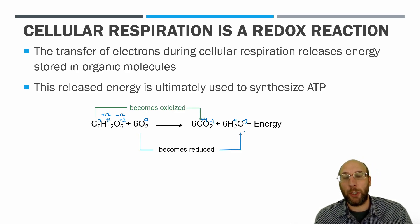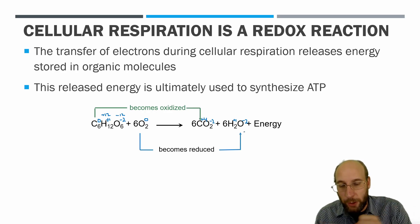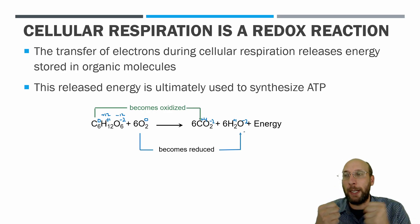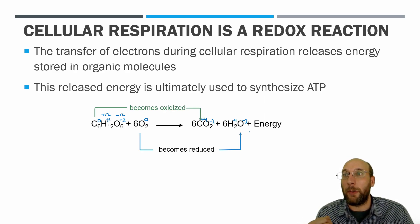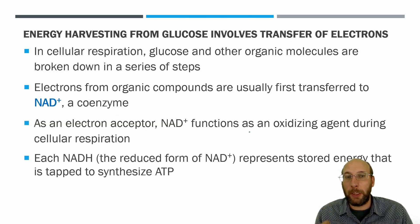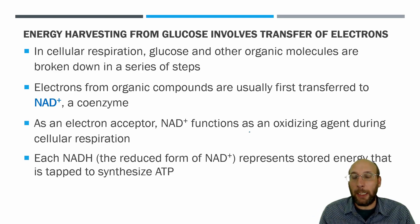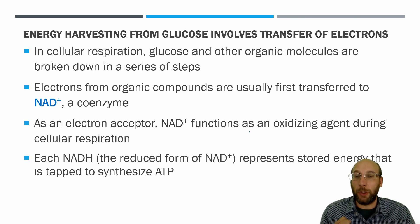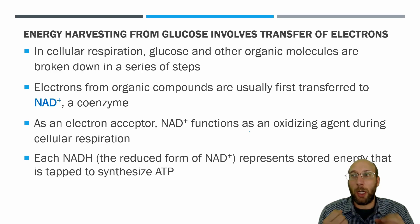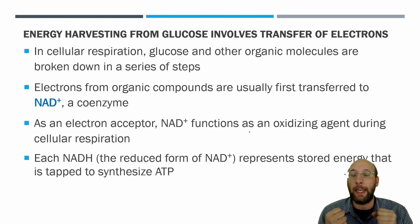In cellular respiration, glucose gets oxidized and electrons are taken off of it. Those electrons get transferred to the coenzyme NAD⁺. NAD⁺ acts as an oxidizing agent, pulling electrons away from glucose, and forms NADH, which holds on to those high-energy electrons and eventually uses them to make ATP.